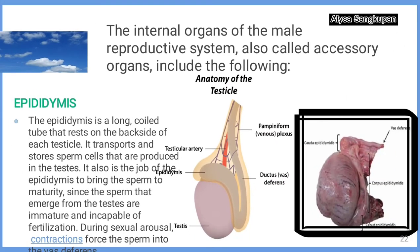Epididymis. This part is the internal organ of the male reproductive system, also called an accessory organ. The epididymis is a long coiled tube on the backside of each testicle. It is also the job of the epididymis to bring the sperm to maturity, since the sperm that emerge from the testes are immature and incapable of fertilization. During sexual arousal, contractions force the sperm into the vas deferens.